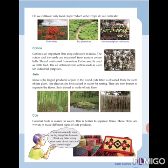Next is coir. Coconut husk is soaked in water, beaten to separate fibers, and these fibers are woven to make different types of coir products such as mats and bags. We can make so many products with coir. When buying things like door mats, we should prefer those made of coir — these are all natural products obtained from nature.